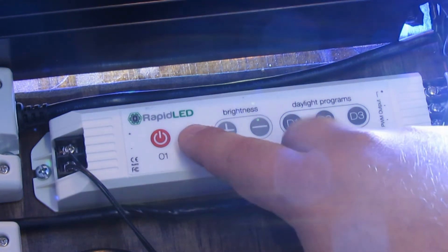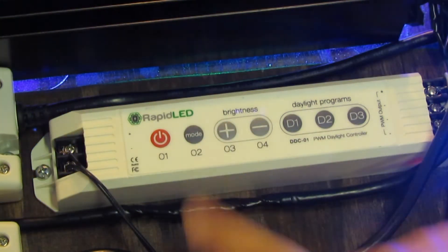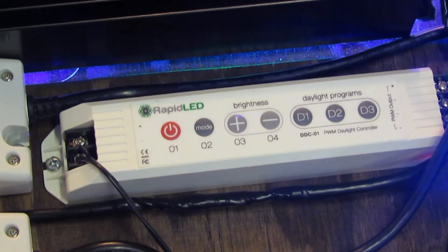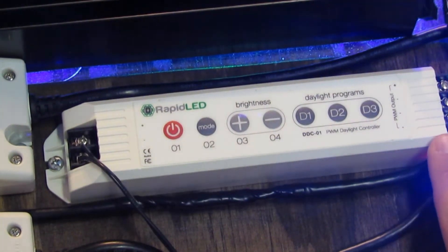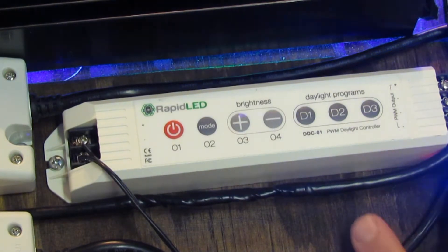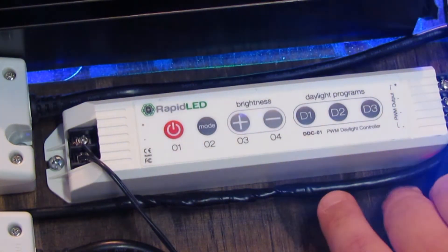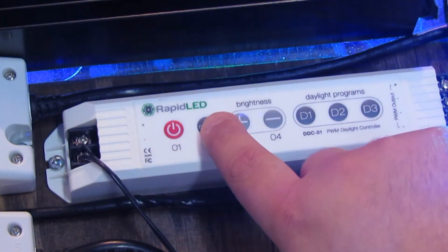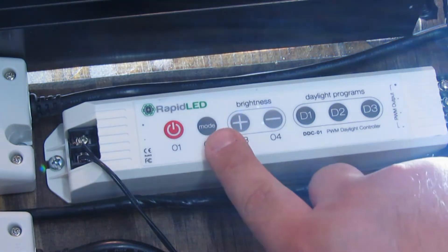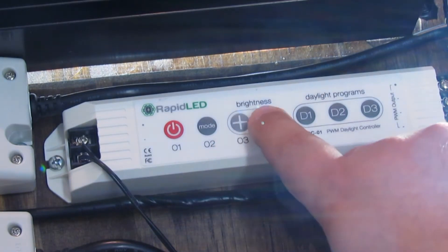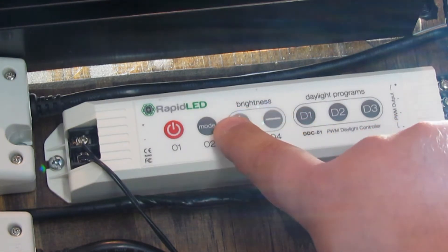If you press the mode button once, your first channel will come on. And my first channel here is set up on the green and purples. That will come on. If I press the mode button again, the whites will come on, which is my second channel. You can also increase and decrease the brightness of each channel just by pressing positive and negative.